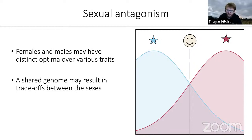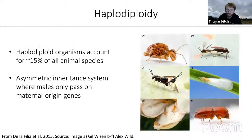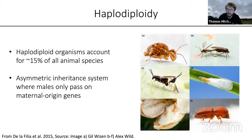Although males and females might have distinct phenotypic optima over a range of traits, they nonetheless share essentially the same genome, which may lead to trade-offs between attaining high fitness in females and in males. This trade-off is commonly known as sexual antagonism, or sometimes as interlocus sexual conflict. Most of the work done on this has focused on diploid organisms, but today I'll focus mostly on haplodiploidy, organisms that account for about 15% of all animal species and span a wide range of genera.